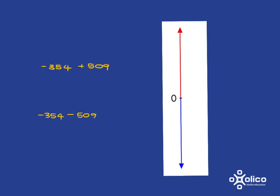So hopefully for the first one you saw that if you were at negative 354 and you needed to go up by 509 steps, well, going up by 354 steps would get you to zero, so if you're going up by 509, you're going up even further, so you will end up in the positives.